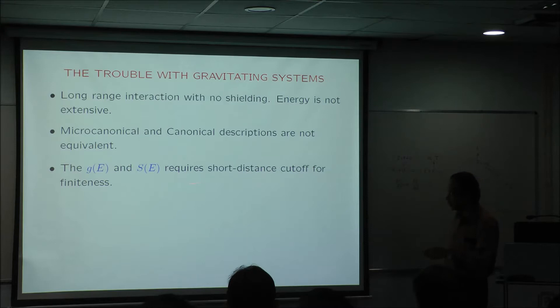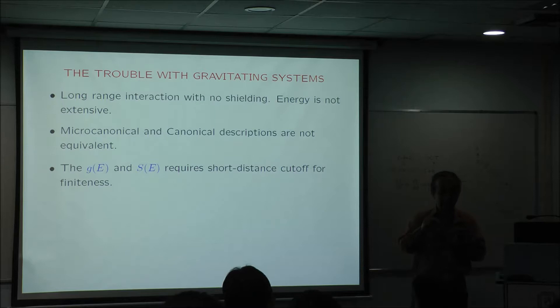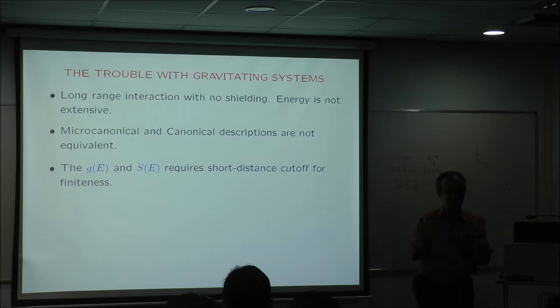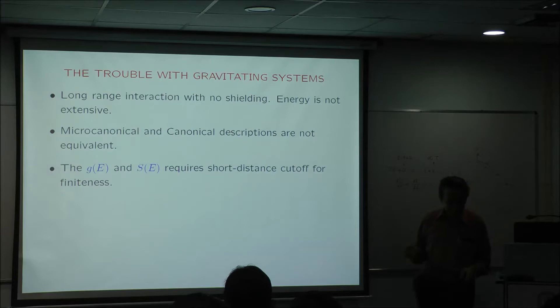There is also one more minor technical issue. When you are calculating things like G(E), if the interaction is like 1/R, then if you put one particle on top of each other, you can release a huge amount of energy. So G(E) will not be finite unless the particles have some kind of finite size. But that is easy in practice, because almost any realistic system where you will be applying it will have some cutoff scale. If you are talking about a star, the radius of the star will provide the cutoff. But it is an important point to keep in mind mathematically.